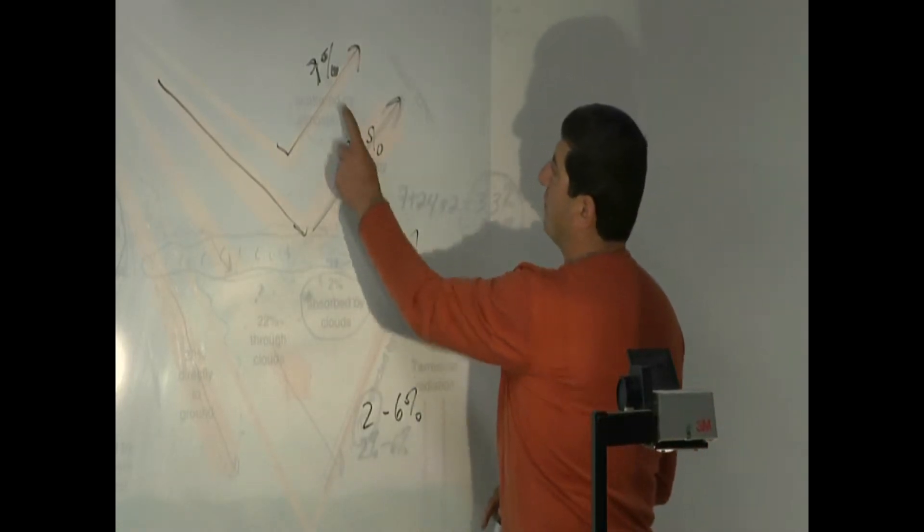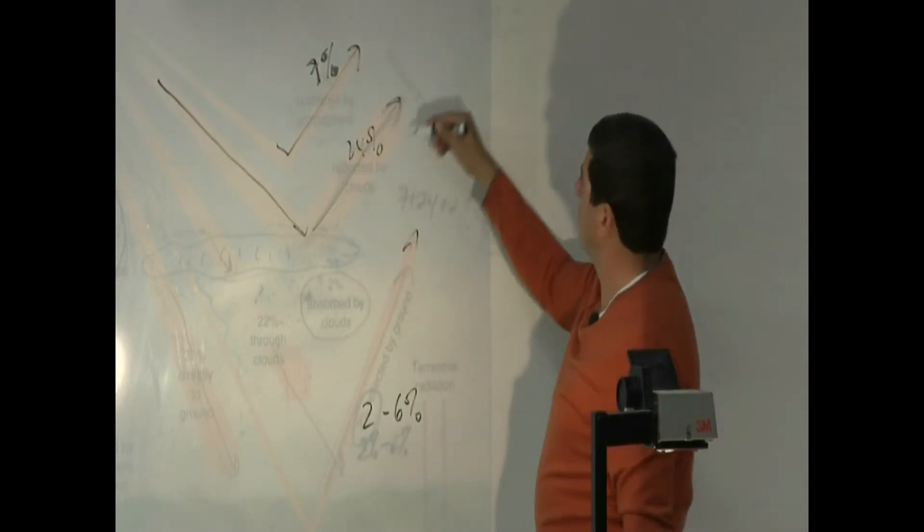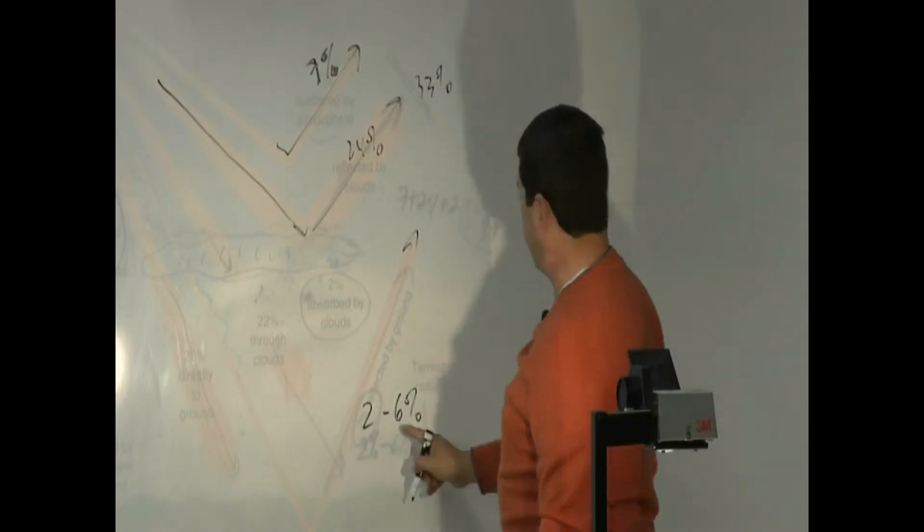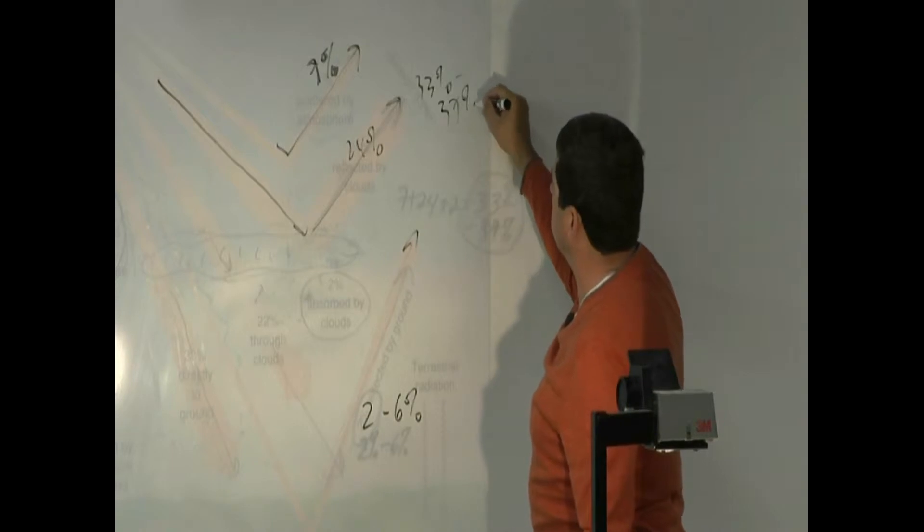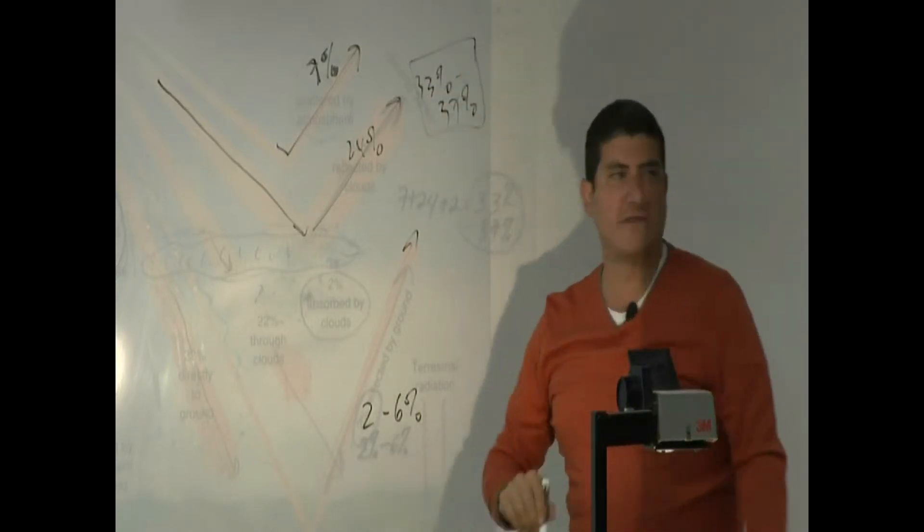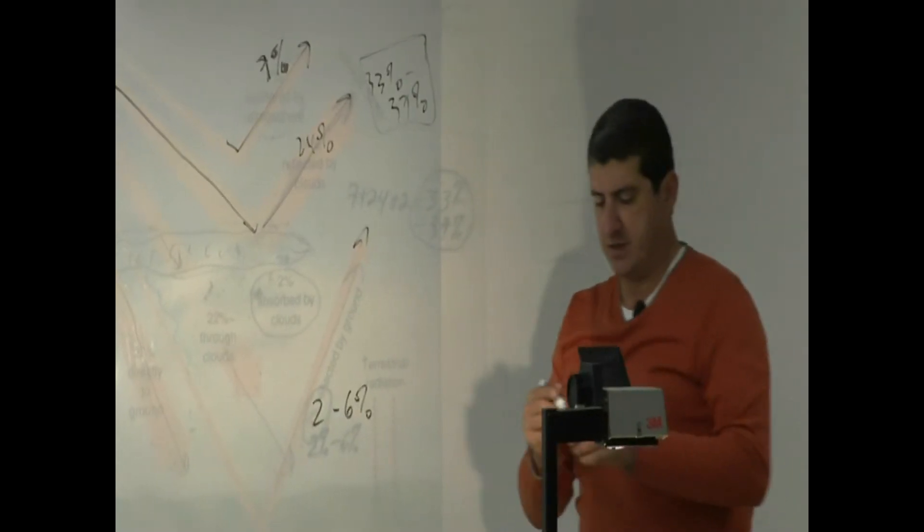If you add 2, 24, 7, you're going to get 9 plus 24, you're going to get 33%. If you add 6, 24, 30, 37. So roughly, albedo of earth, roughly between 33 to 37%.